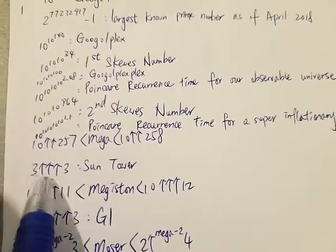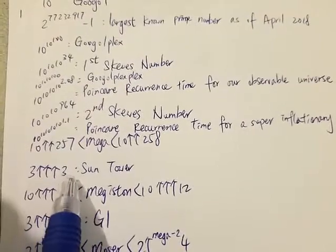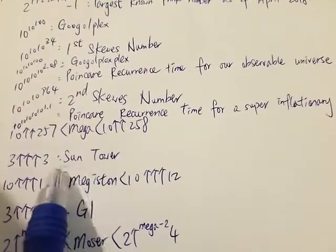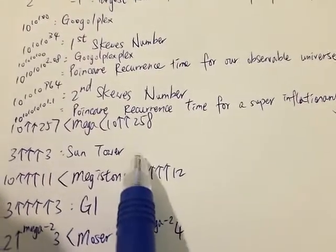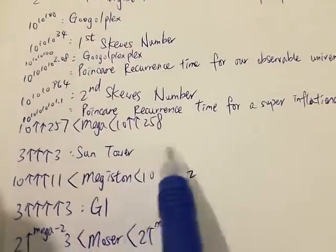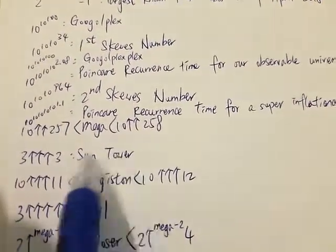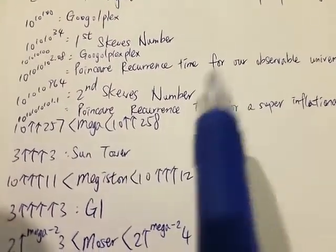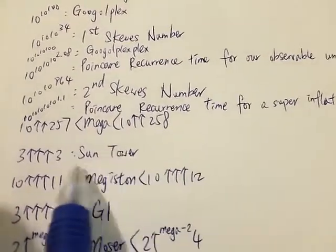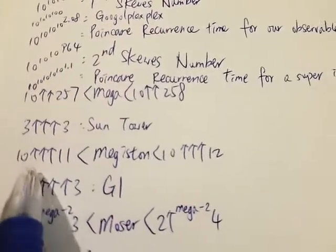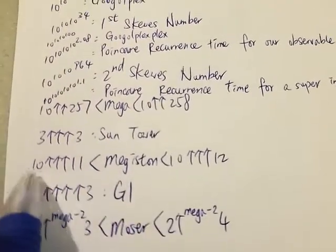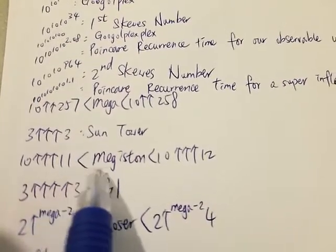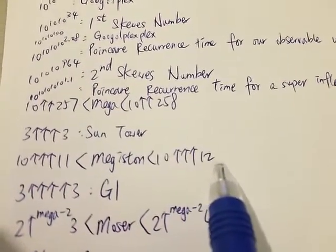Next we have 3 triple-arrow 3, which I call Sun Tower — one of the big numbers related to Graham's number. Next we have the Megiston, which is between 10 (triple arrow) 11 and 10 (triple arrow) 12.